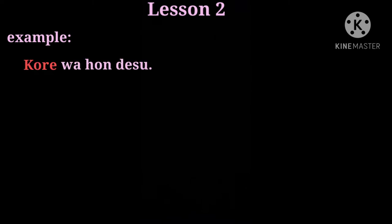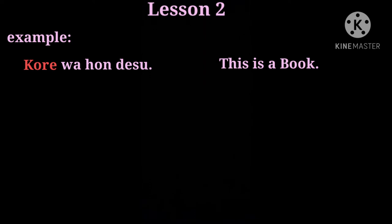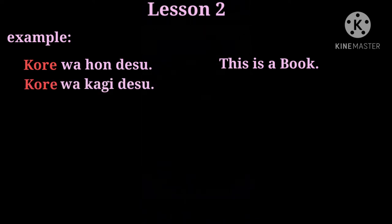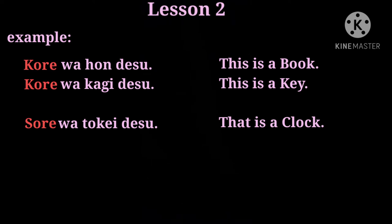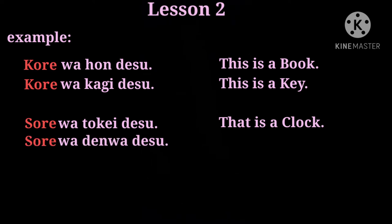Examples for Kore: Kore wa hon desu means this is a book. Kore wa kagi desu means this is a key. Examples for Sore: Sore wa tokei desu means that is a clock. Sore wa denwa desu means that is a telephone.